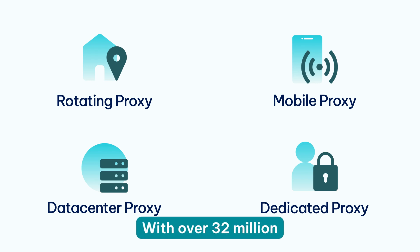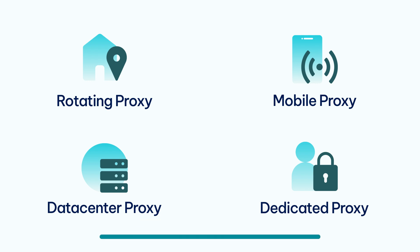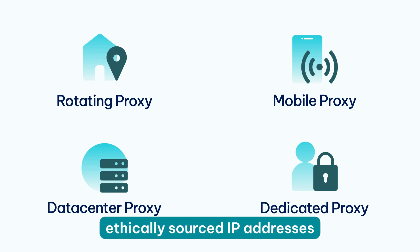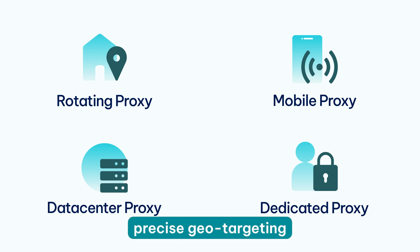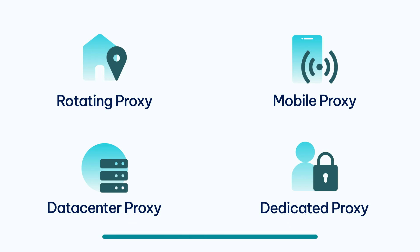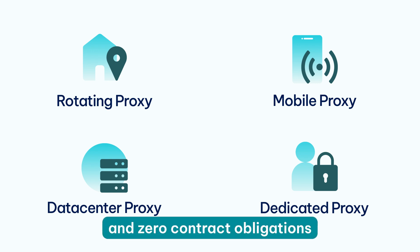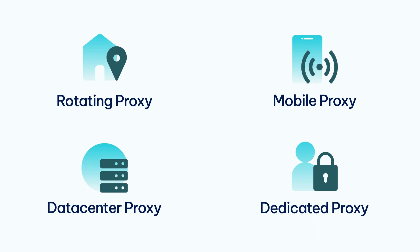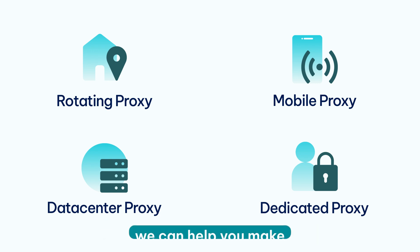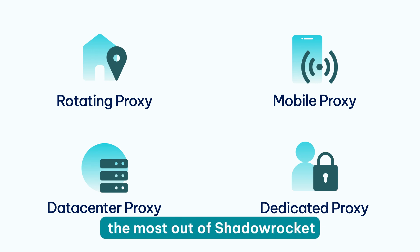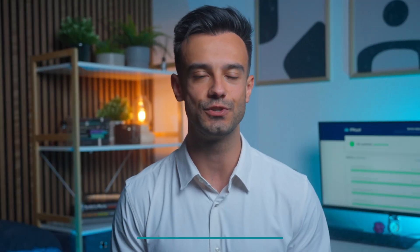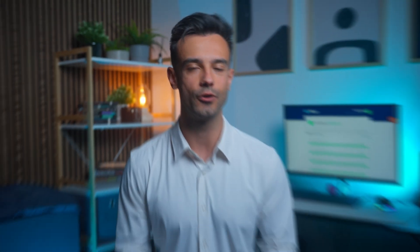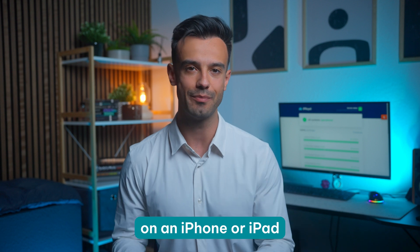This is where IP Royal's residential pool comes into play. With over 32 million ethically sourced IP addresses in every corner of the world, precise geo-targeting and zero contract obligations, we can help you make the most out of ShadowRocket. Here's how to set up our residential proxies with ShadowRocket on an iPhone or iPad.